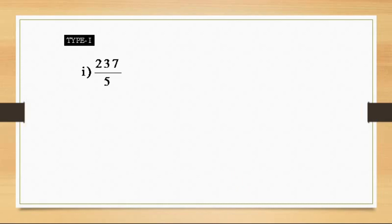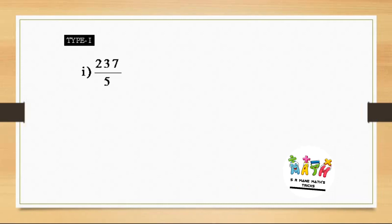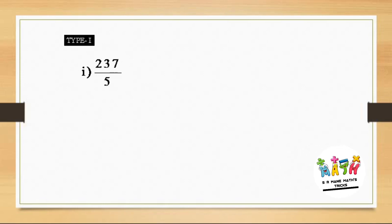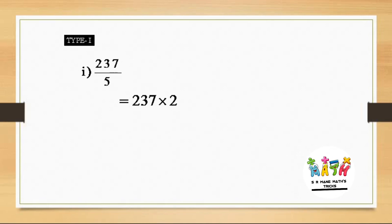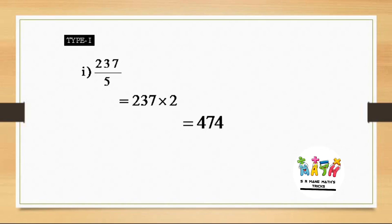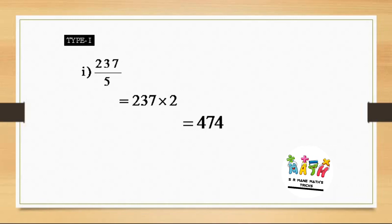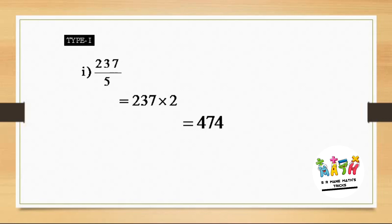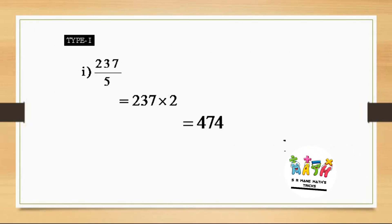For the first example: 237 divided by 5. The numerator term is 237. The simple thing is that we have to multiply the numerator by 2, so 237 × 2 = 474. Then, from right to left, we take one digit and place the decimal, so we get 47.4 as the answer.